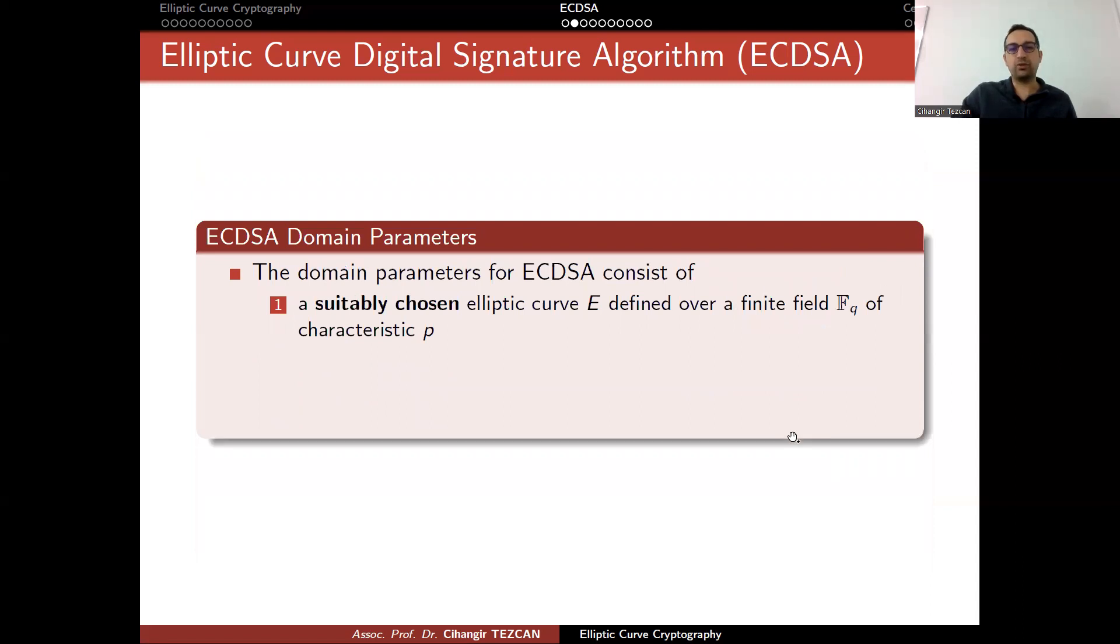It starts with choosing domain parameters. This is very important. The domain parameters of an elliptic curve digital signature algorithm consist of a suitably chosen elliptic curve E defined over a finite field FQ of characteristic P. By characteristic P, we mean that if this is P to the power something, so here P is the prime number. You can either choose Q equals to P, or you can choose Q equals to 2 to the power M. You choose a base point on this elliptic curve.